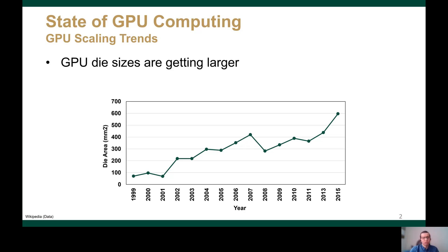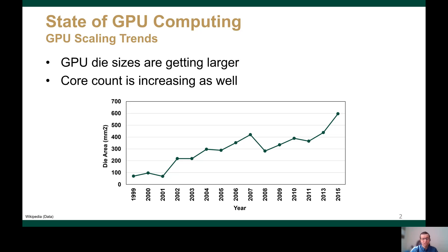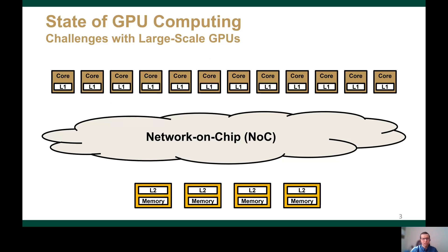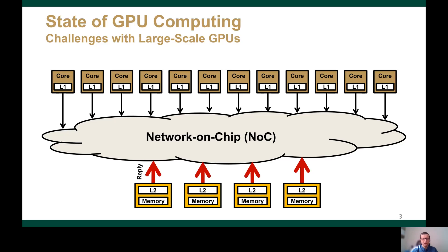GPUs are a crucial component in most computing systems as they provide orders of magnitude faster and energy efficient execution for many general purpose applications. To match the increasing computational demands, GPUs have been scaling in die size as shown in this plot. And as the die size increases, the number of cores increases as well. This leads to an increase in the volume of requests from the many cores,